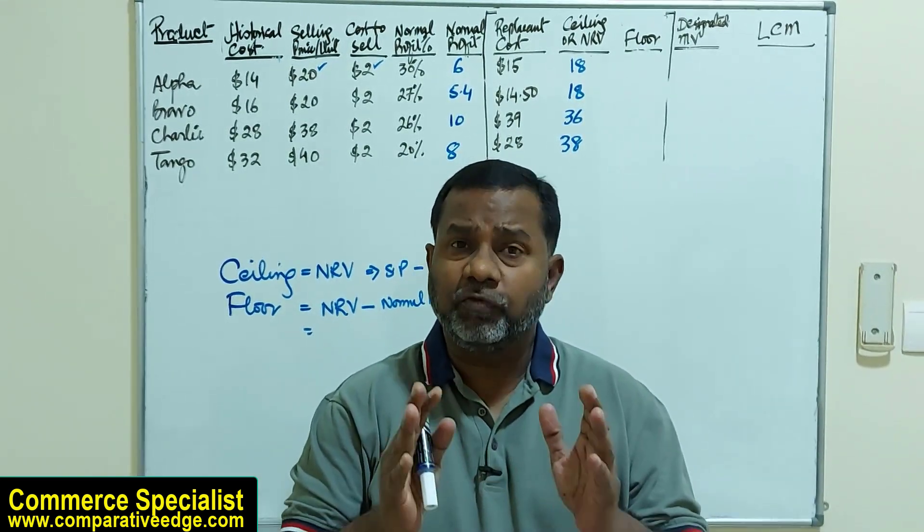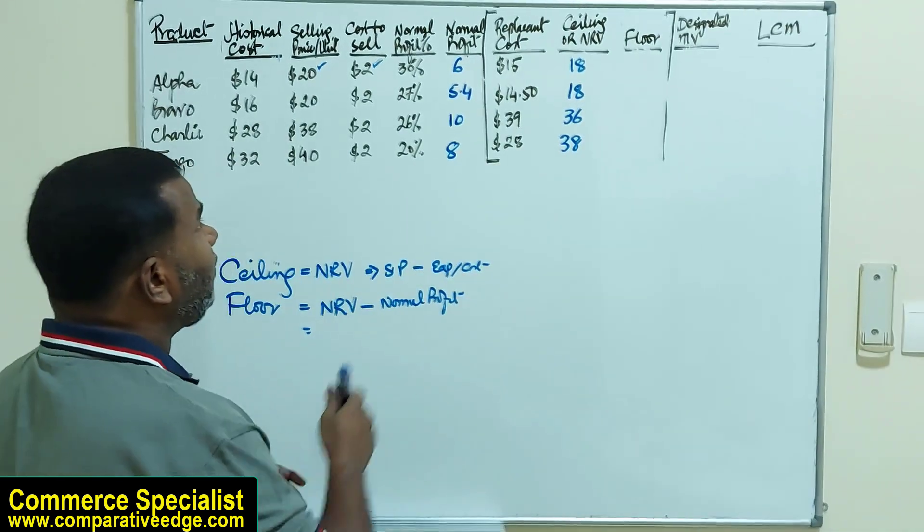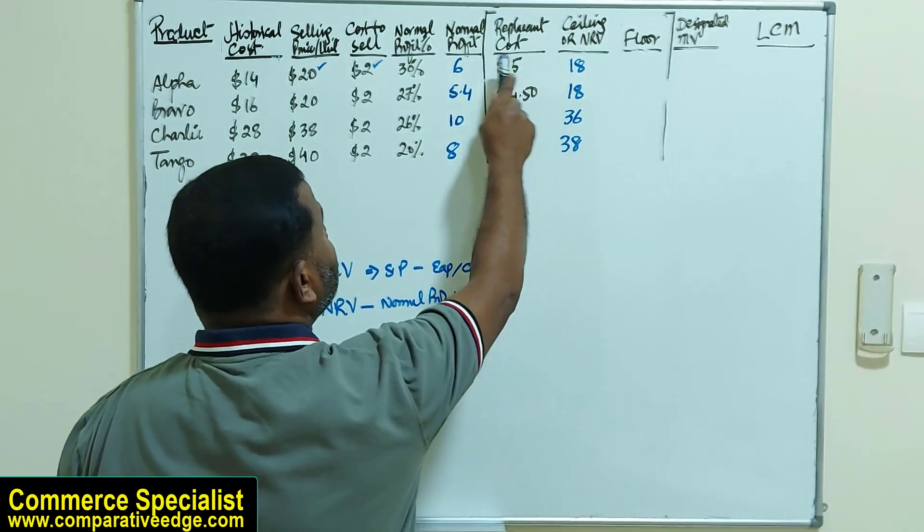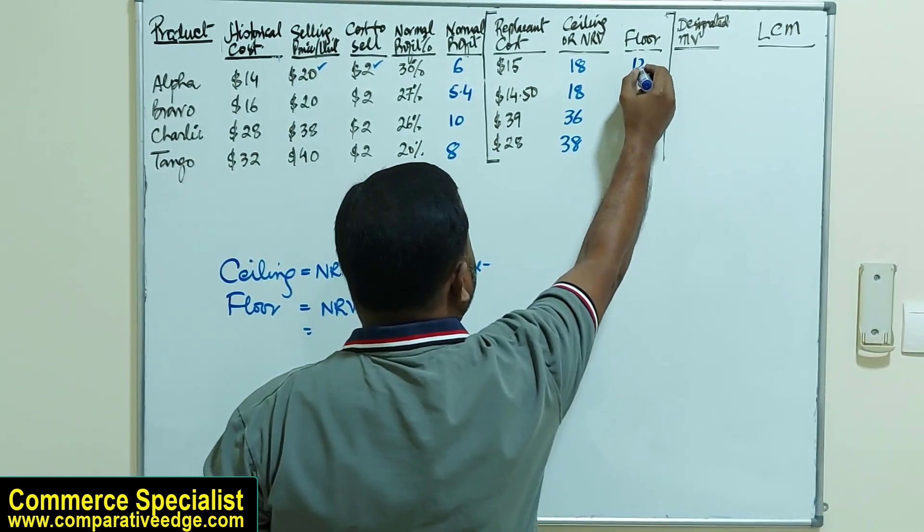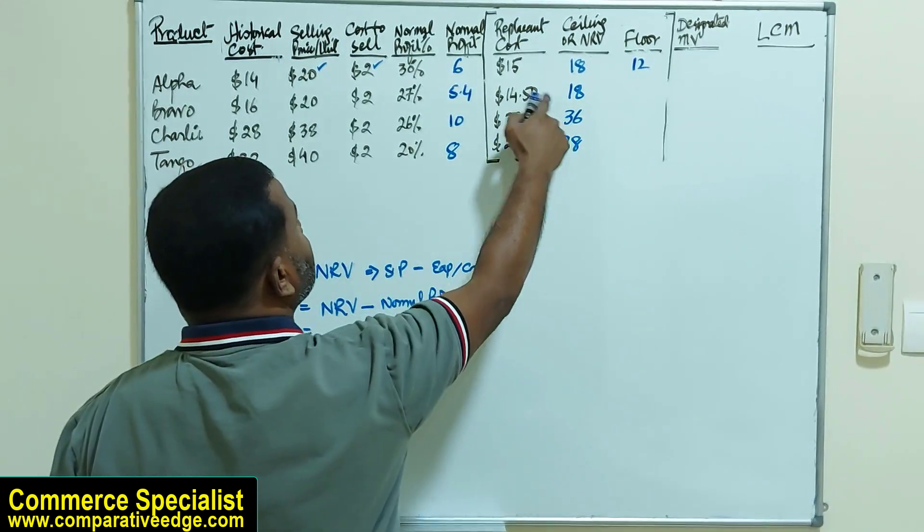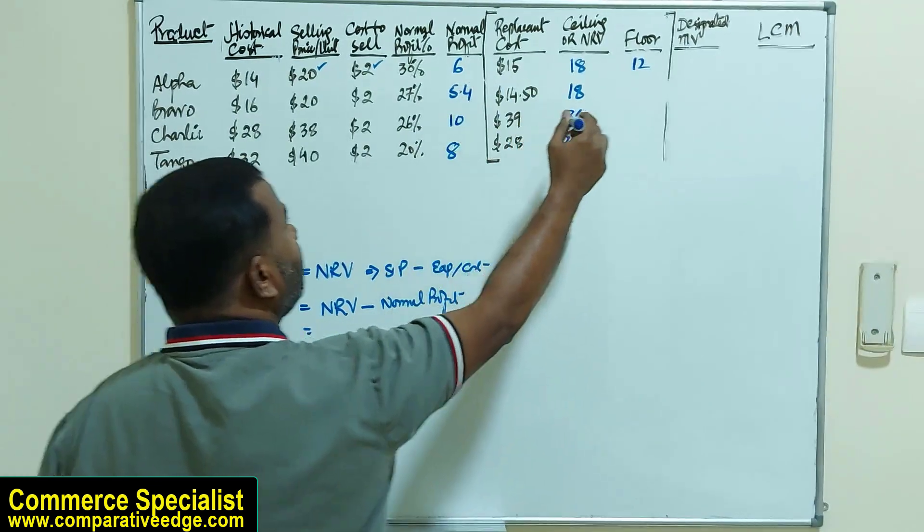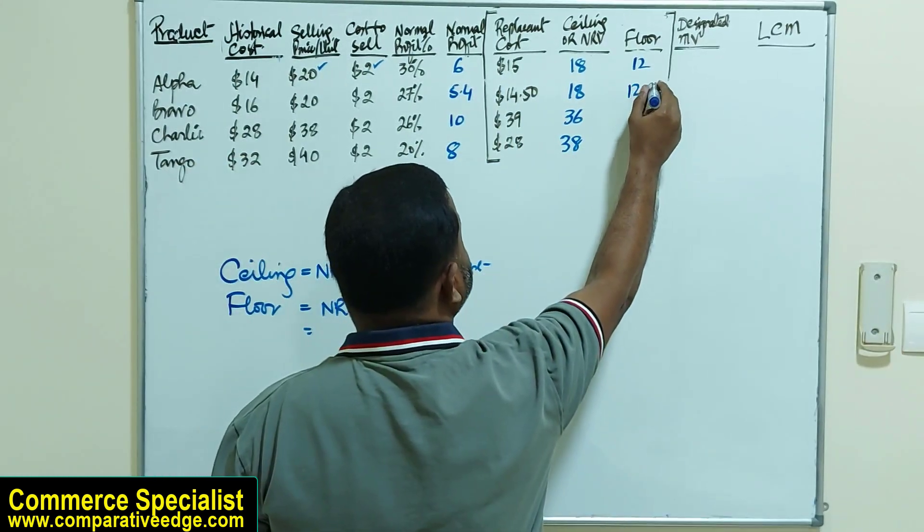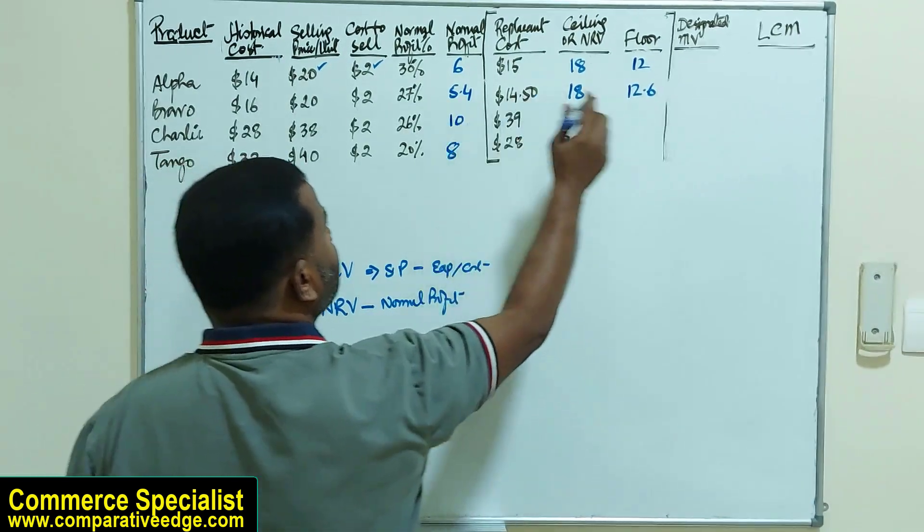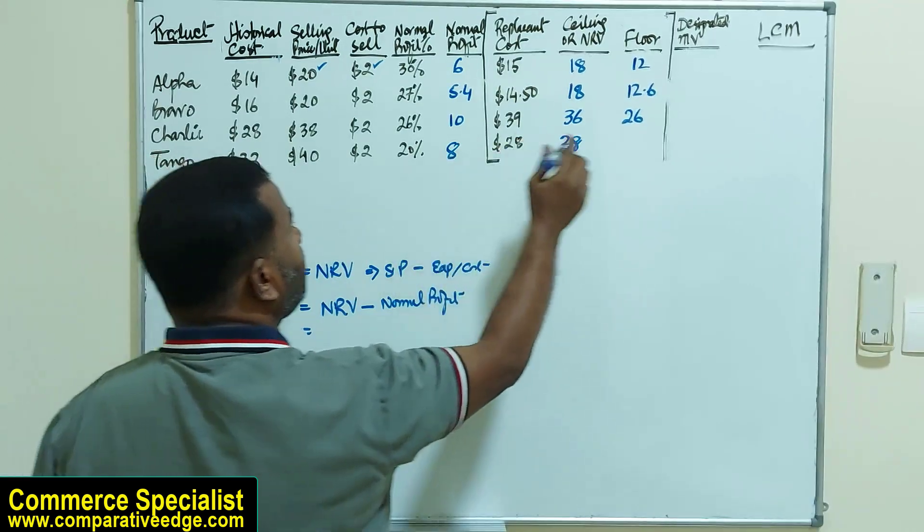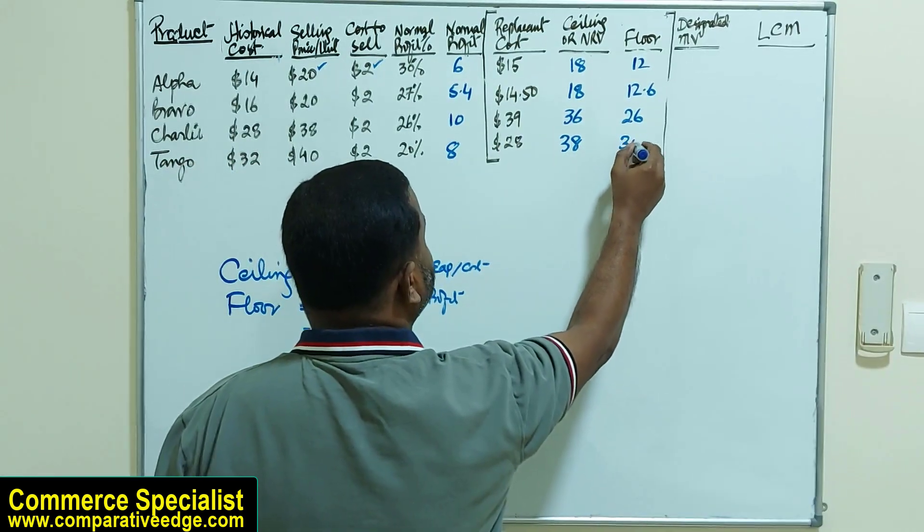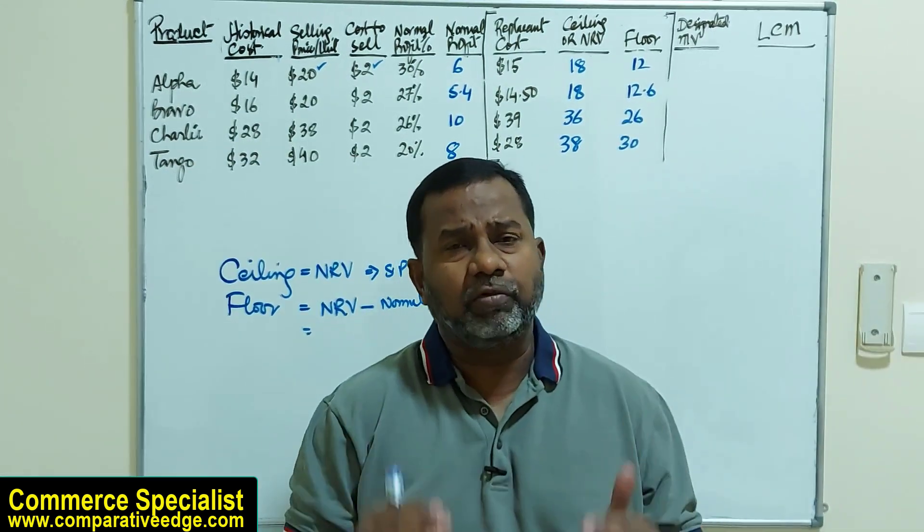Now that we have normal profit figures, we can simply subtract it from NRV to get floor. We have NRV here: $18 minus normal profit $6 gives us a floor of $12. $18 minus $5.40 gives us $12.60. $36 minus $10 gives us $26, and $38 minus $8 gives a floor of $30. Floor means the minimum price.